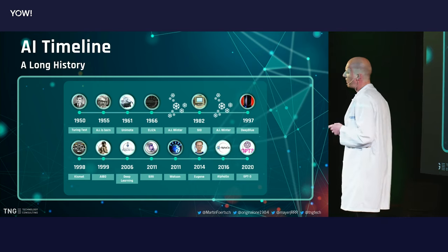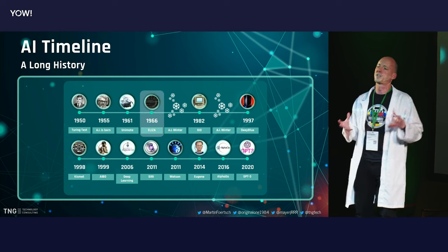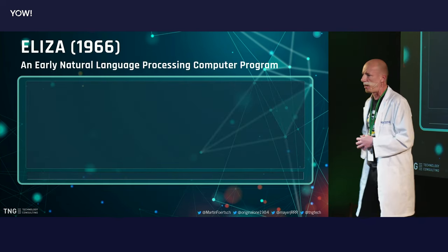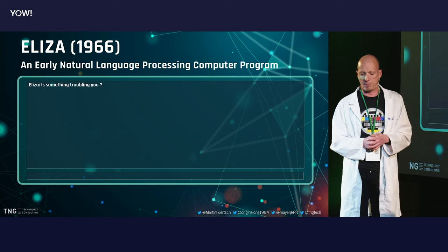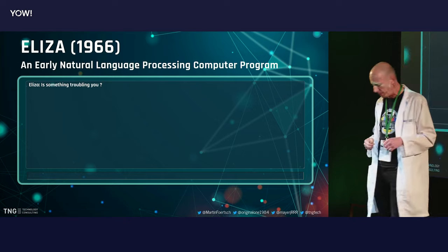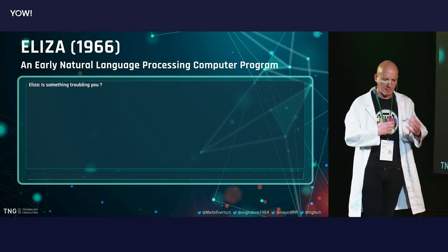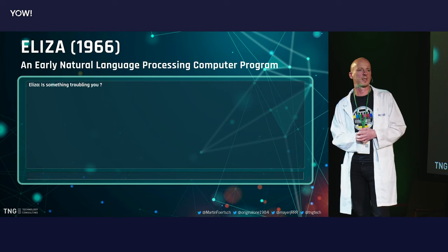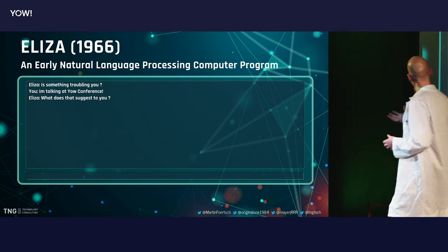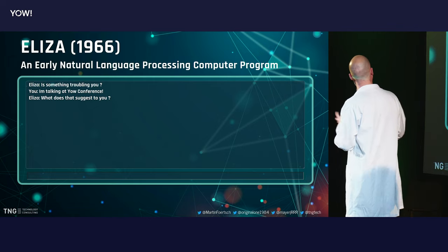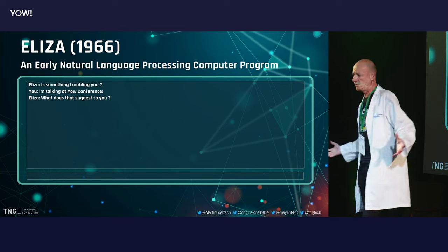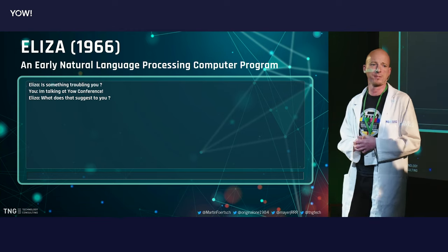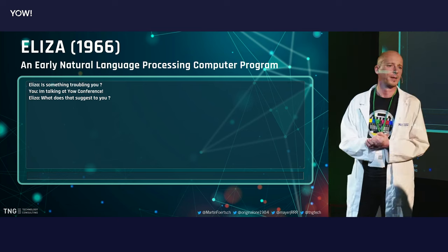So let's have a look at one of the first chatbots in the world — Eliza, invented in 1966 by Joseph Weizenbaum. When the press discovered Eliza, they were amazed — it could replace a therapist or something like that. Eliza starts by asking something like 'Is something troubling you?' Jonas entered the sentence 'I'm talking at your conference,' and Eliza said 'What does that suggest to you?'